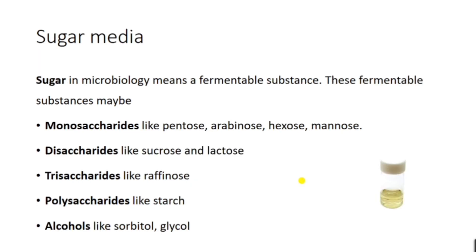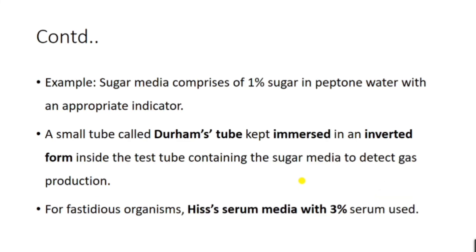Sugar in microbiology means a fermentable substance. These fermentable substances may be monosaccharides like pentoses, arabinose, hexoses, and mannose; disaccharides like sucrose and lactose; trisaccharides like raffinose; polysaccharides like starch; and alcohols like sorbitol and glycerol. Sugar media comprises 1% sugar in peptone water with an appropriate indicator. A small tube called Durham's tube is kept immersed in an inverted form inside the test tube containing the sugar media to detect gas production. For fastidious organisms, serum media with 3% serum is used.